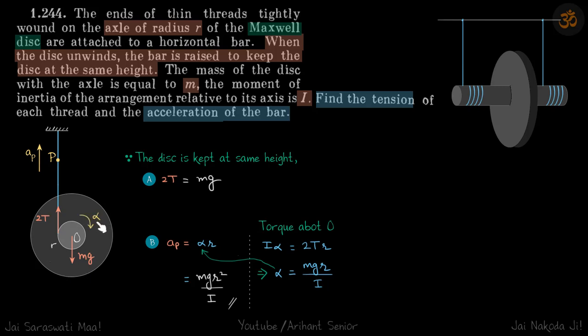You can see that about the center O, this point is moving up with acceleration alpha times small r, and that will be the acceleration of point P—that will be the acceleration of the bar. So ap is equal to alpha r. We need to find ap. Now r is given, alpha we don't know.